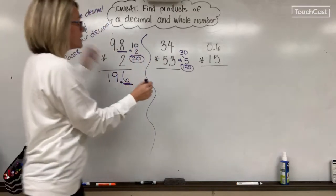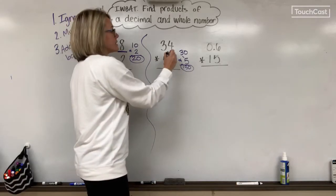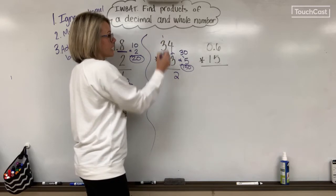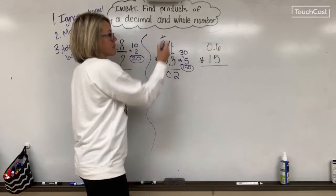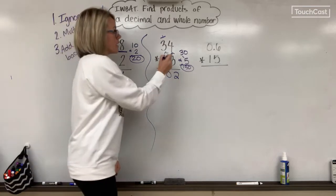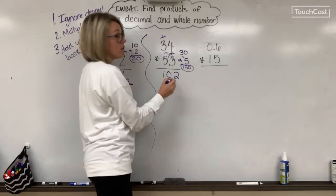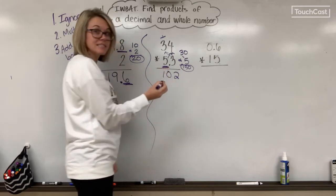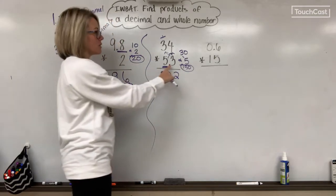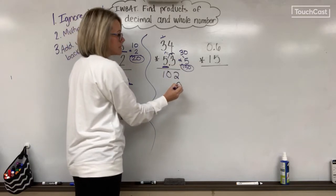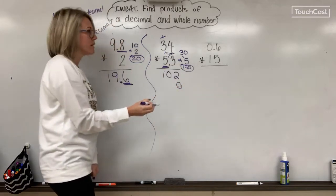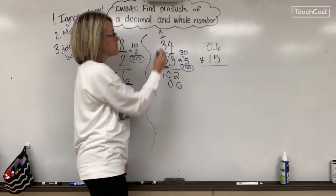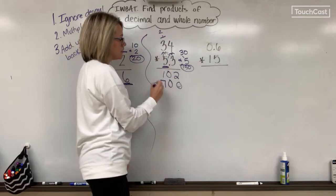Step 1, ignore the decimal. Pretend this decimal is not there. 3 times 4 is 12, carry my 1. 3 times 3 is 9, plus 1 is 10. I'm going to mark that off so I don't accidentally add it later. 5 times 4 is, well, what did I forget to do? I'm moving to my tens, the next place value, so I have to put a 0 there. 5 times 4 is 20, carry my 2. 5 times 3 is 15, plus 2 is 17.